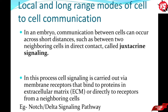We will start with local and long-range modes of cell-to-cell communication. In an embryo, communication between cells can occur across short distances, such as between two neighboring cells in direct contact — this is called juxtacrine signaling. In this process, cell signaling is carried out by the membrane receptor that binds to protein in the extracellular matrix or directly to the receptor from neighboring cells.